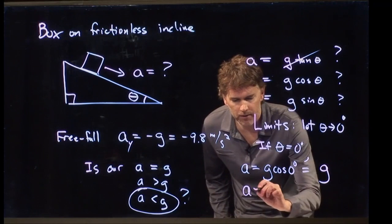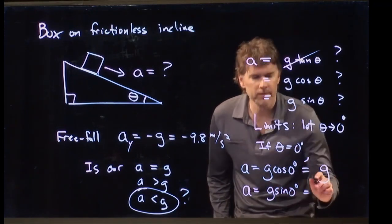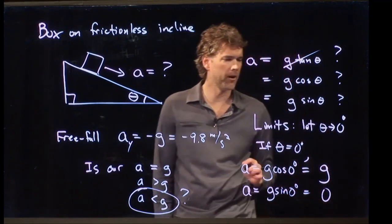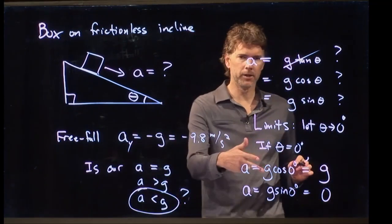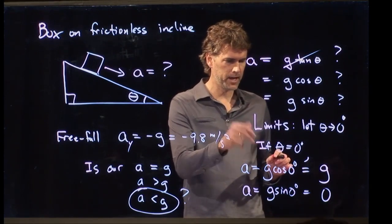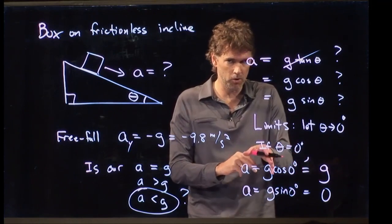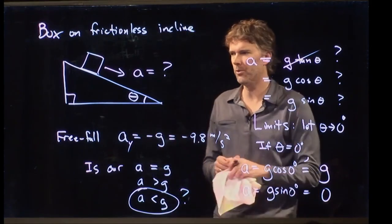What about sine of 0 degrees? That's the one that's 0, right? So we get 0. So now all we got to do is figure out which one is the right limit. If theta equals 0, should we have an acceleration that's equal to gravity, or should we have an acceleration that's equal to 0?